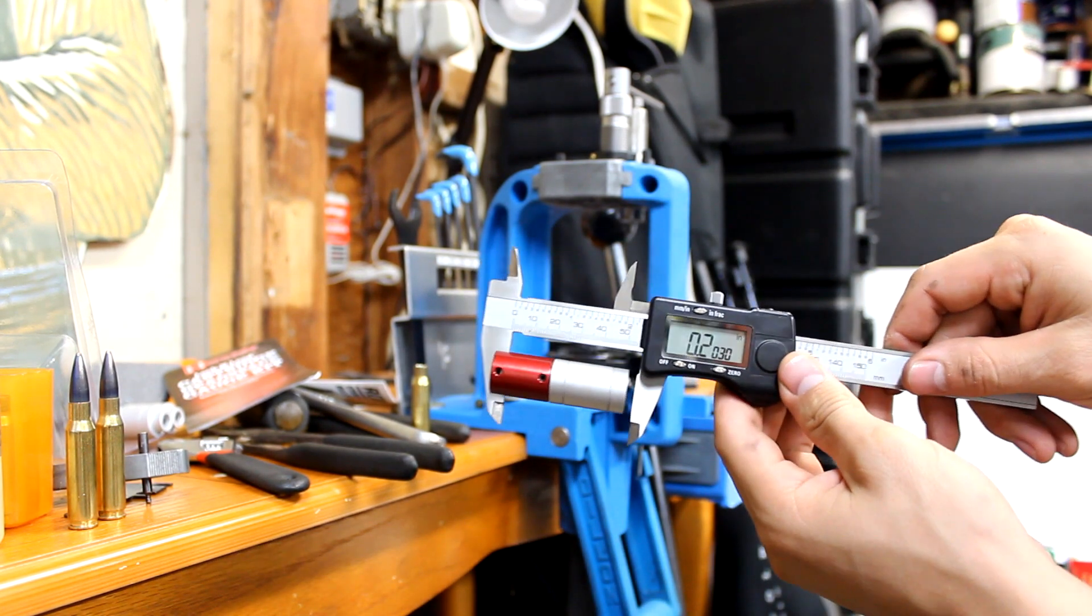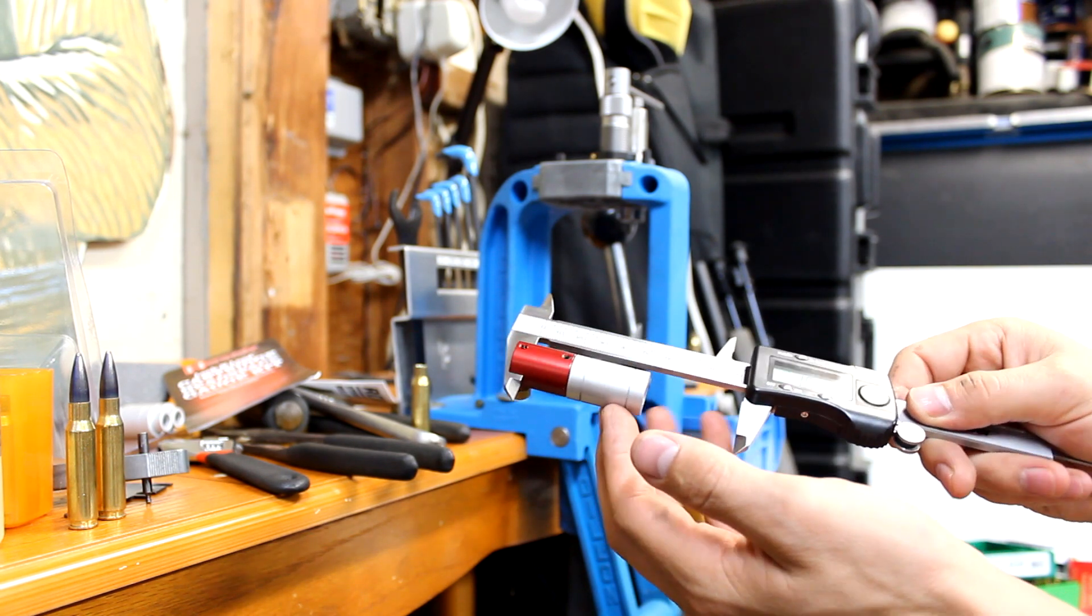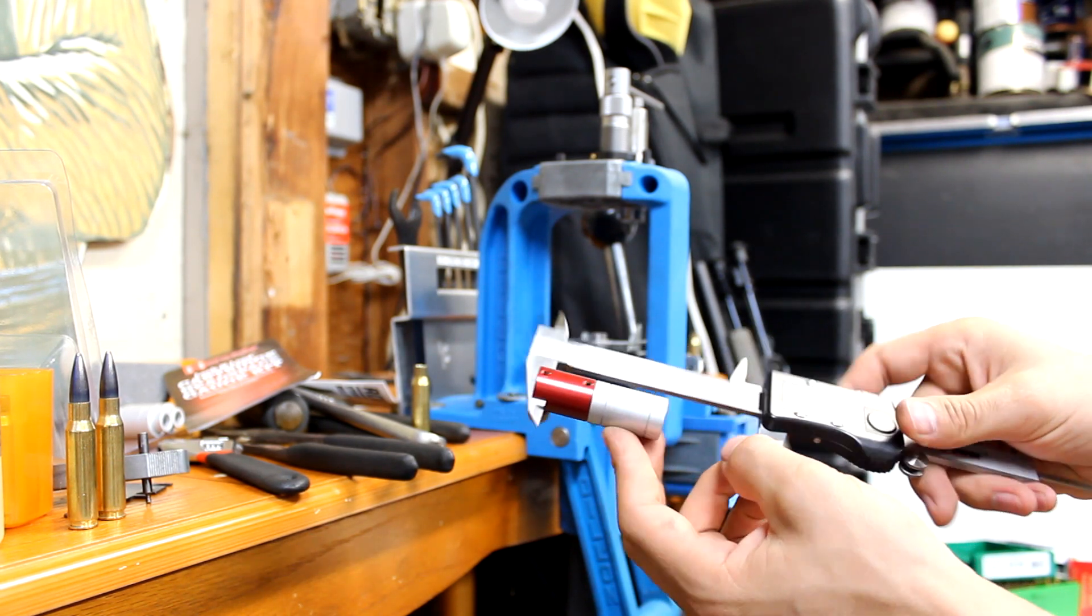So we're going to put it on our caliper. We're going to zero it out and I have the size for the .308 or the .30 caliber.